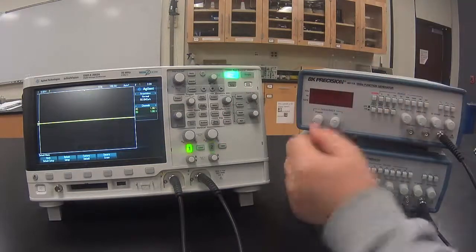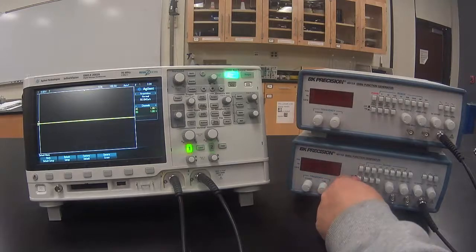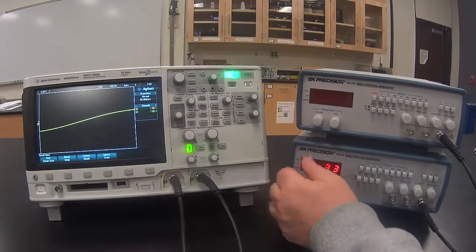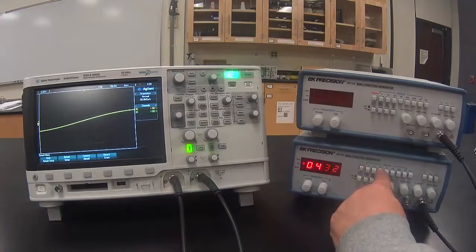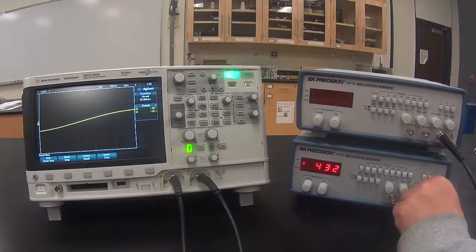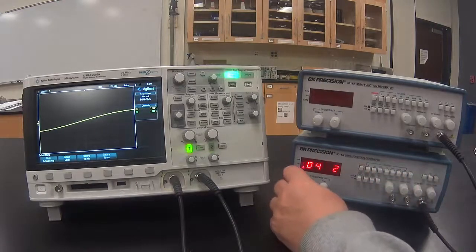Turn on the function generator that's connected to channel 1. Adjust the function generator to somewhere between 300 to 500 Hz. Set the voltage at about halfway.